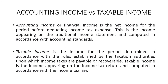What is the difference between accounting income and taxable income? Accounting income, or financial income, is the net income for the period before deducting income tax expense. This is the income appearing on the traditional income statement, computed in accordance with accounting standards. Taxable income is the income for the period determined in accordance with the rules established by the taxation authorities upon which income taxes are payable or recoverable. It appears in the income tax return and is computed in accordance with income tax law.